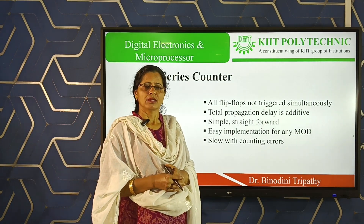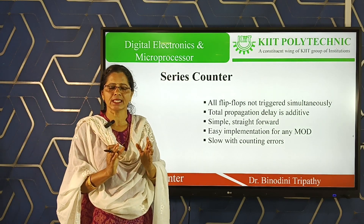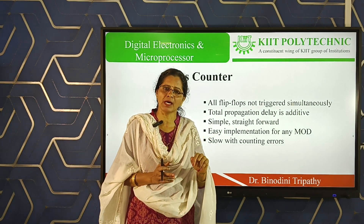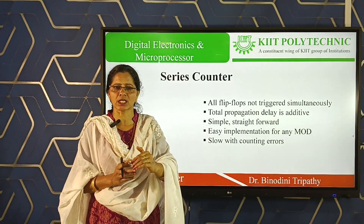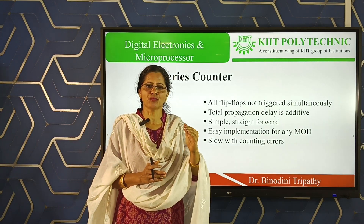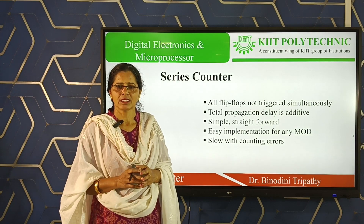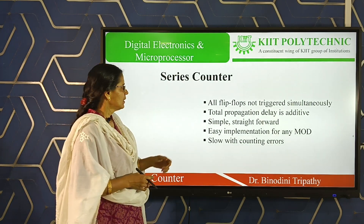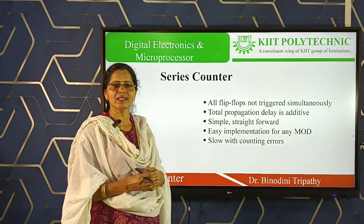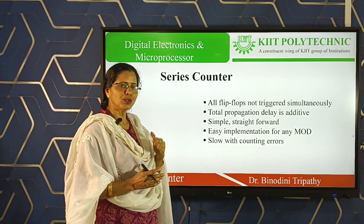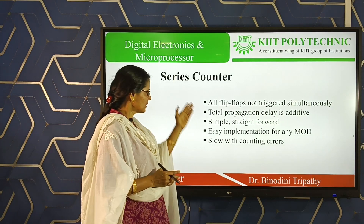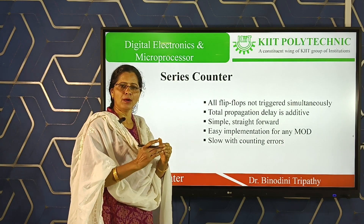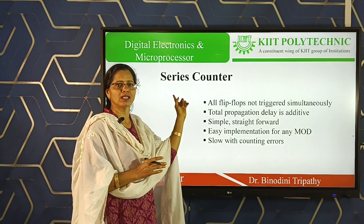In a series counter, those flip-flops are connected in series, and the main source clock input is applied to the first flip-flop. The output of the first flip-flop is used as the clock input for the second flip-flop. The second flip-flop output acts as the clock input for the third flip-flop, and so on. Serially, we apply the clock input — it is a series counter. This counter also has alternative names: ripple counter, serial counter, and asynchronous counter.